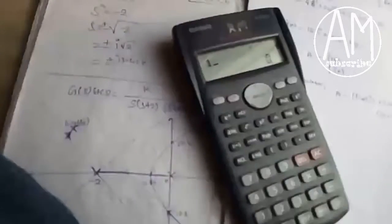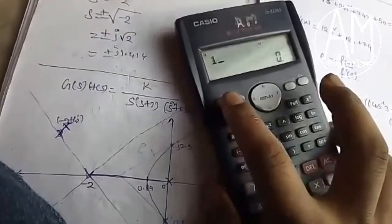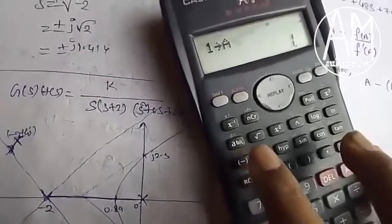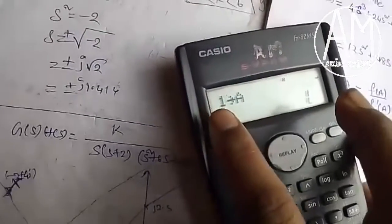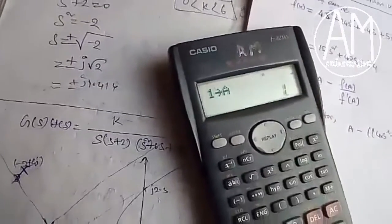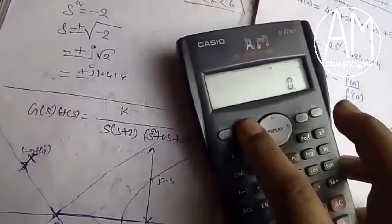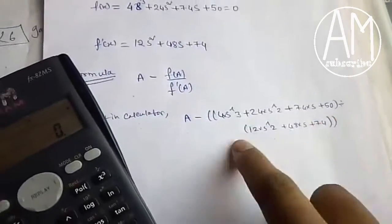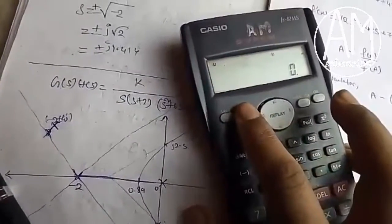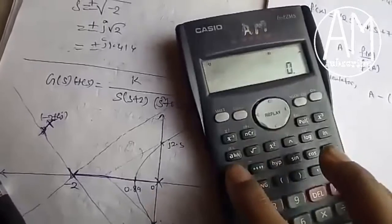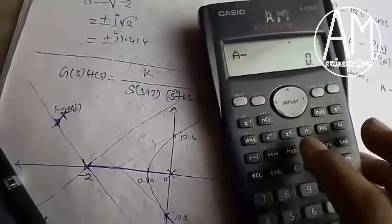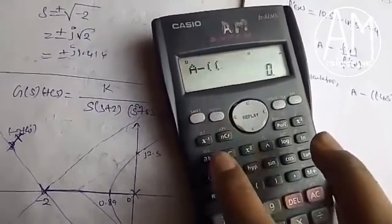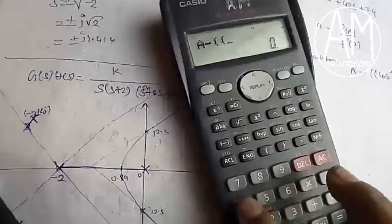Click Shift, RCL, and then A. You can see the calculator is showing A equals 1, that is set. Now we have to put this equation on the calculator. For that, press Alpha, then A minus double bracket, then 4 into A to the power 3 plus 24 into A to the power 2.